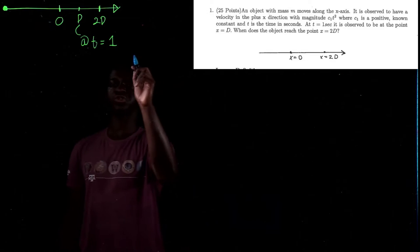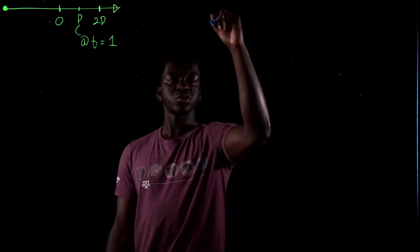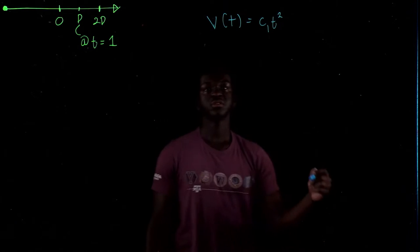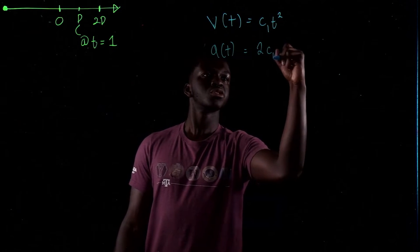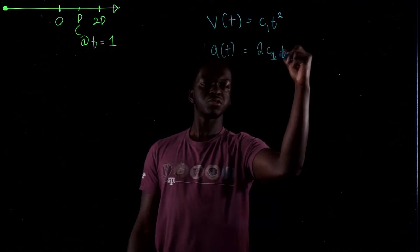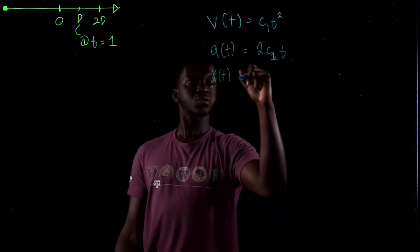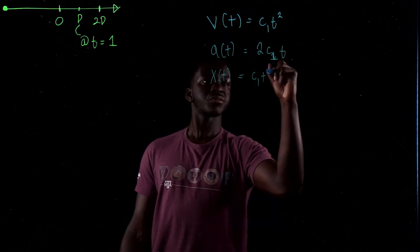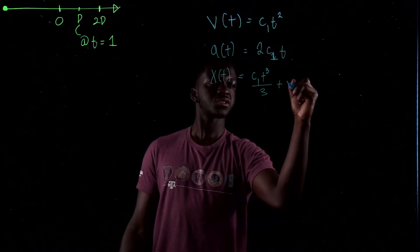When does the object reach x equals 2d? We're trying to find the time for when it reaches 2d. Let's start off by writing down what they gave us: the velocity is c1t squared. So v of t is equal to c1t squared. And we know acceleration is the derivative of that, which is 2c1t.